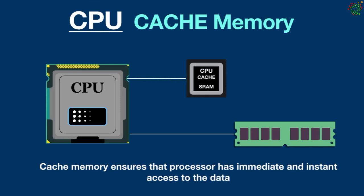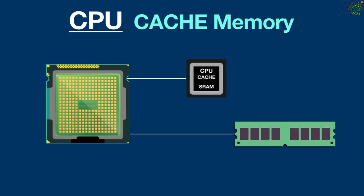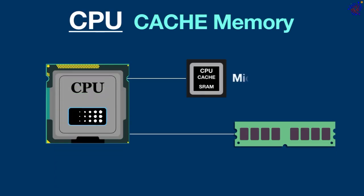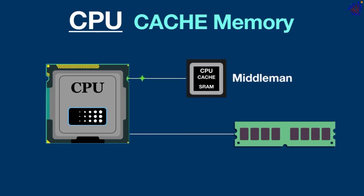CPU cache is a temporary data store located directly on the processor. Cache memory works as a middleman between CPU and RAM by efficiently storing common data and instructions.